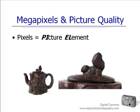A megapixel is one million pixels, and a pixel is a picture element. If you want to think of a picture element, it's a teeny tiny square that holds color information or exposure information.